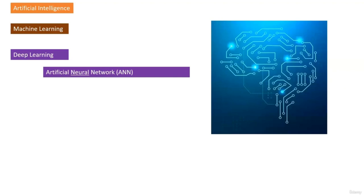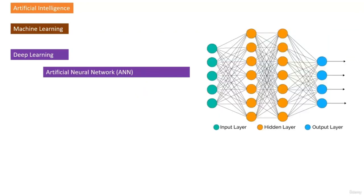ChatGPT uses deep learning. A basic type of deep learning is known as an artificial neural network. We use the word 'neural' because the way deep learning works is very similar to the way our human brains operate. In an artificial neural network, you have an input layer, a hidden layer, and an output layer. The hidden layer is where all the processing happens — we use the term 'hidden' because the processing is not accessible to us.